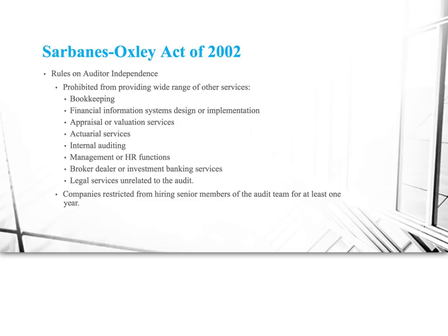Sarbanes-Oxley also changed the rules on auditor independence. One of the big driving forces in the Enron scandal with Arthur Anderson was that Arthur Anderson was the auditor of Enron, but they were only getting about 20-25% of their total Enron revenue from auditing. The majority of revenue from Enron to Arthur Anderson was coming from consulting services. The consultants were putting together questionable arrangements and then pressuring the auditors: 'Don't blow this for us — there's a lot of money on the line.' Sarbanes-Oxley took that off the table: if you are an audit company doing the audit, you can't provide consulting or bookkeeping or these other services.